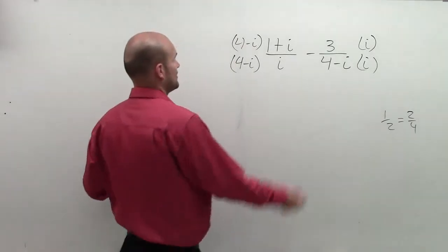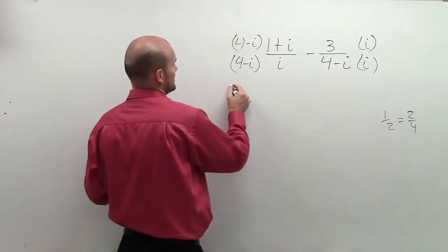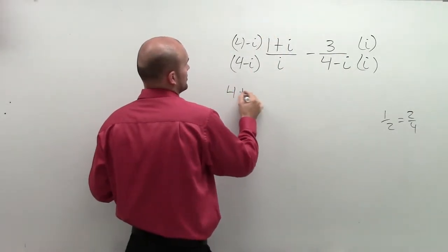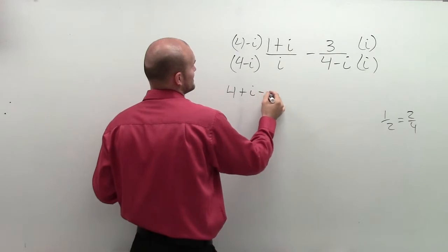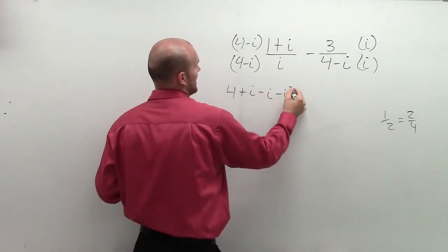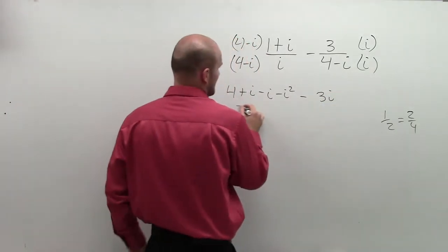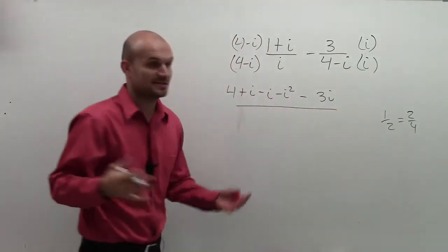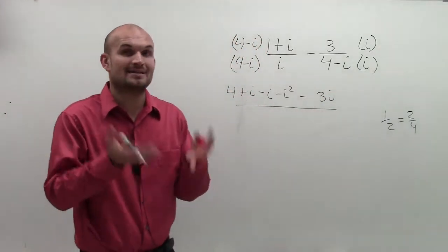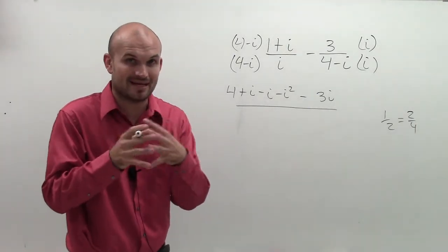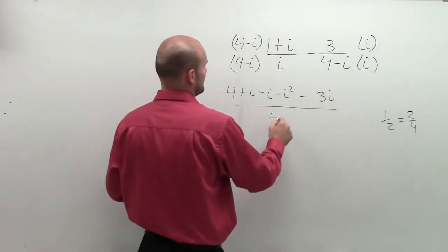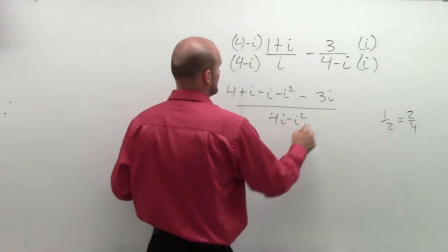Now, I just need to multiply across. Here, I'm going to use my FOIL technique. So I have 4 plus i minus i minus i squared minus 3i. And then remember, this is going to be a common denominator. Since you have common denominators, when you combine them, you're going to get them to be a common denominator. So this is just going to be 4i minus i squared.